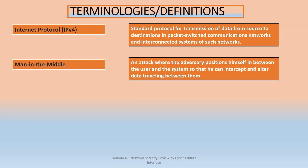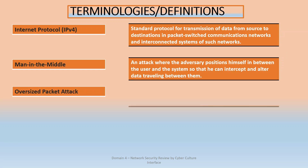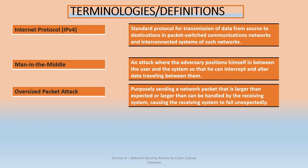Man-in-the-Middle is an attack where an adversary positions himself between the user and the system. As an end user you try to access a server, but someone is in between you and the server. Your message is intercepted and they reply to you, making you think the message is coming from the server. This is a man-in-the-middle — someone standing between the user and the system.